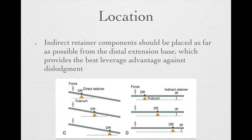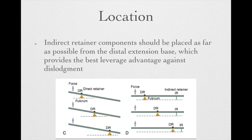The ideal location for indirect retainers should be as far as possible from the distal extension basis to provide maximum leverage advantage against dislodgement. Think of a seesaw — when we have a distal extension basis and a force tries to dislodge it, the seesaw movement lifts the back and sinks the front. That's why we need something in the front to stop its sinking — that's why we need indirect retainers.